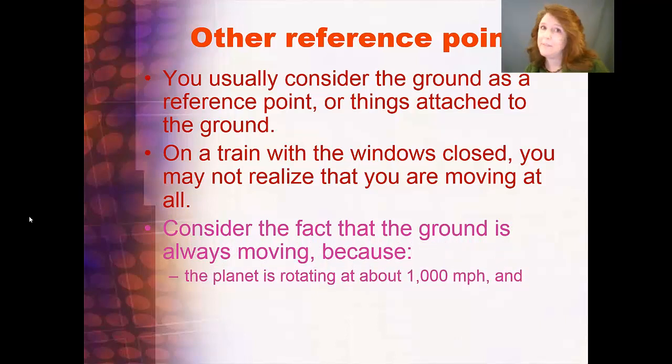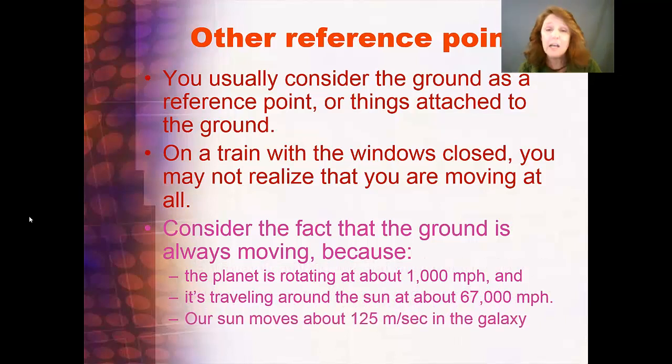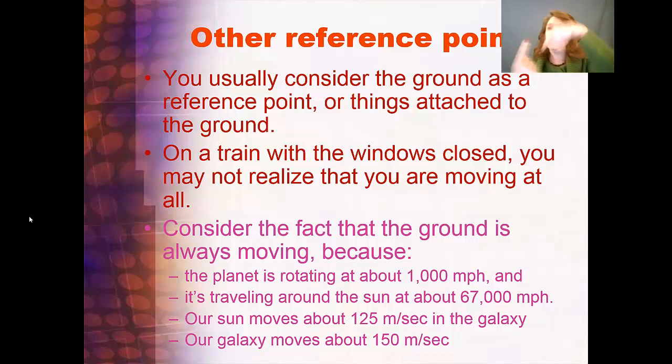I'd like you to consider the fact that the ground is also always moving, because the planet rotates, which means it's spinning around at about 1,000 miles an hour. It's traveling around the sun at about 67,000 miles per hour, and the sun is moving 125 meters per second in the galaxy, and the galaxy is moving at about 150 meters per second. So you are going really, really fast. To use the ground as a reference point is still like you sitting in a train car because the ground is moving too, but we need to define, when we're talking about physics, all of our terms. So we're going to say this is our reference point, and we're moving at a speed relative to this.